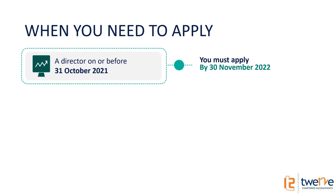So this is the important thing - when do you need to apply? The key date when this came in was the 31st of October 2021. If you're already a director before that date, you don't have to get an ID until the 30th of November 2022. So you've got about a year to get your Director ID.